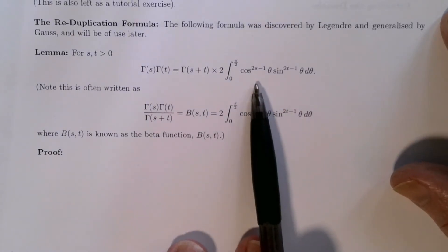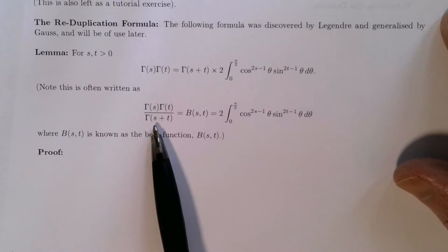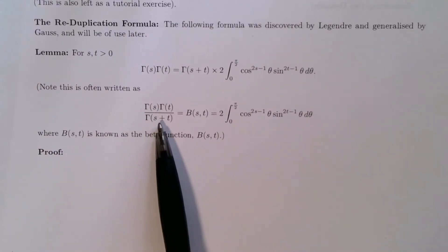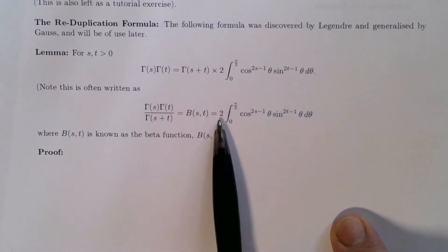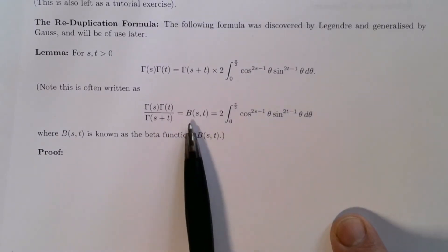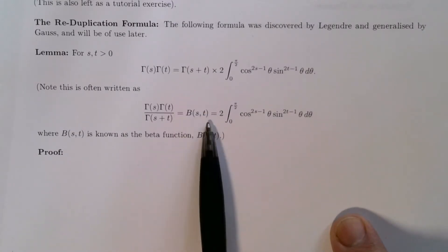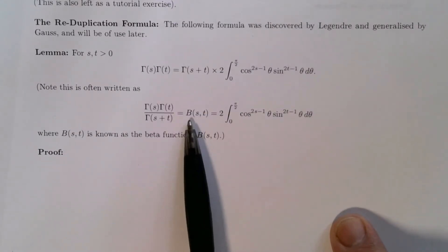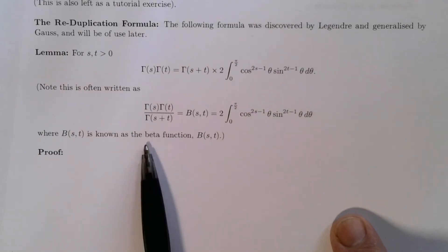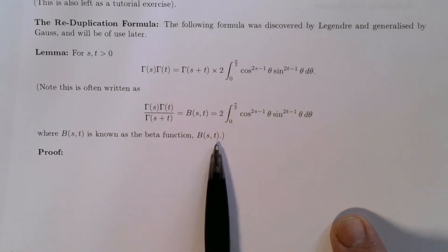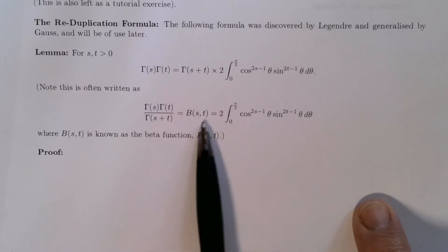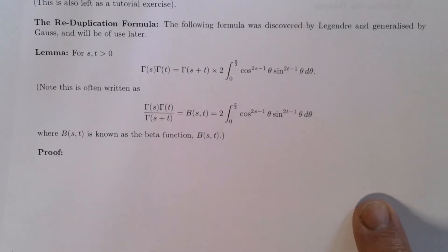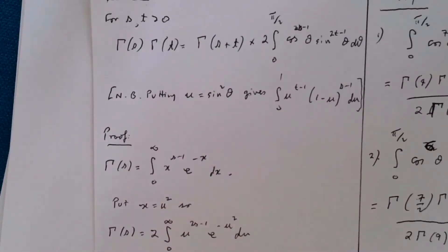This formula is often written in the following form: you divide by gamma of s plus t and rename this integral as beta, or B of s and t — this is called a beta function, or beta integral, of two parameters s and t. You may have seen the beta function in a slightly different form, which I'll mention in a second. Here's a little proof of how this works — it's quite a nice little exercise in calculus.